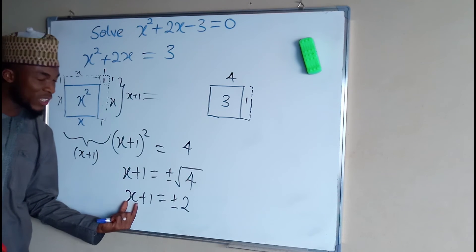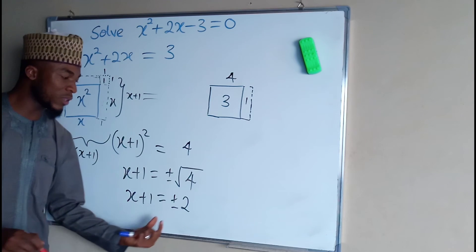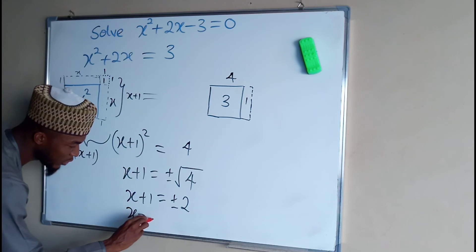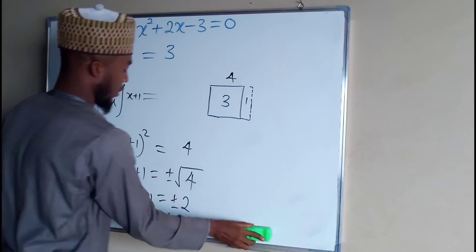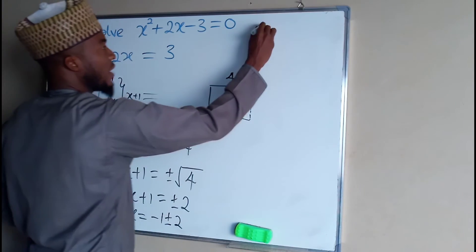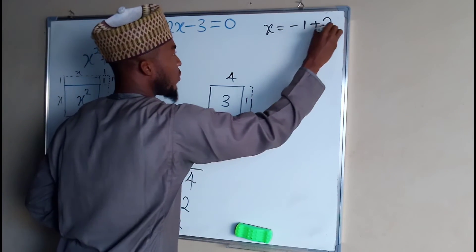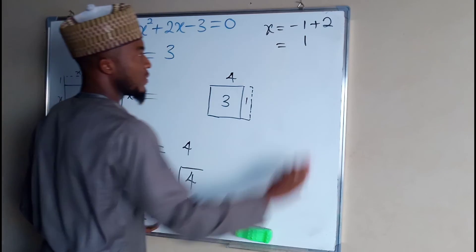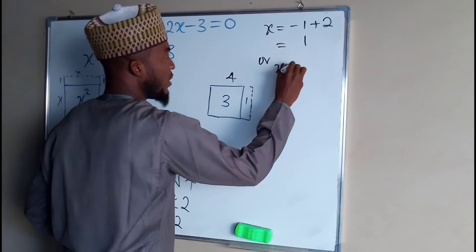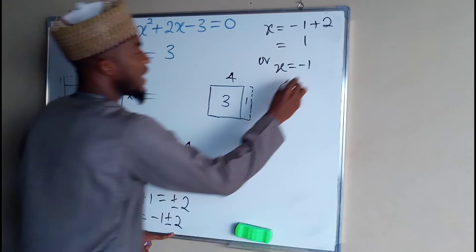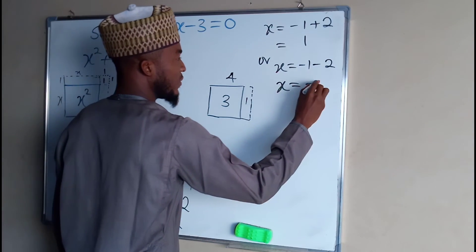x plus 1 will be equal to plus or minus 2. Now we need to find the value of this x. Finding the value of this x, we have to take 1 to the right hand side. So that we have x equal to negative 1 plus or minus 2. x will be equal to minus 1 plus 2, which is equal to 1. Or x will be equal to minus 1 minus 2. And x now equals to negative 3.